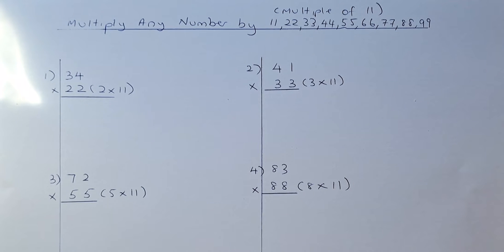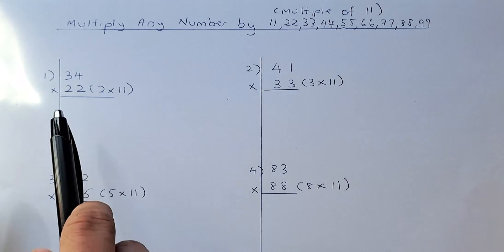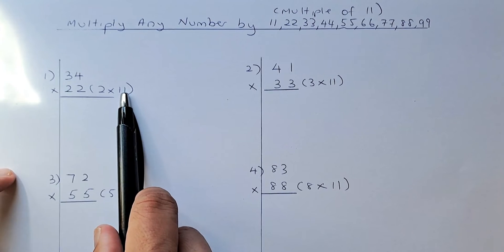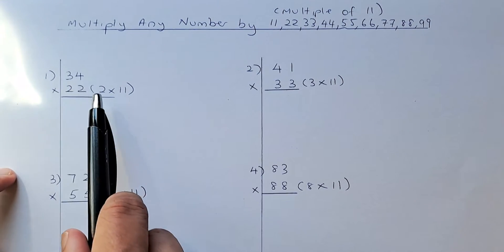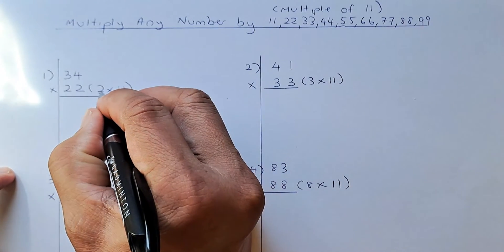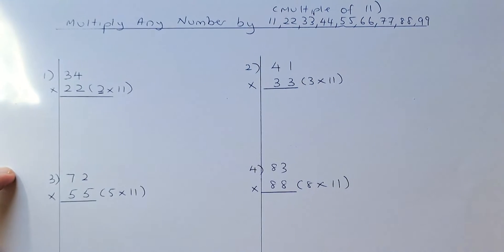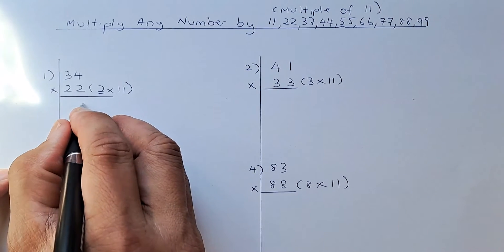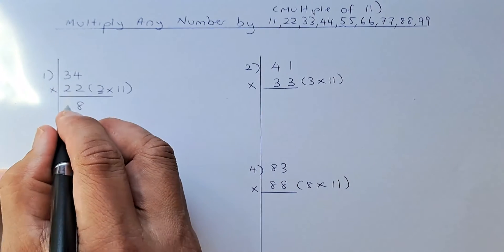So the first question is 34 multiplied by 22. 22 is actually made up of 2 times 11. So what you need to do is multiply 34 by 2 first. So we're going to multiply by 2 and then followed by 11. To multiply by 2, it's very simple.